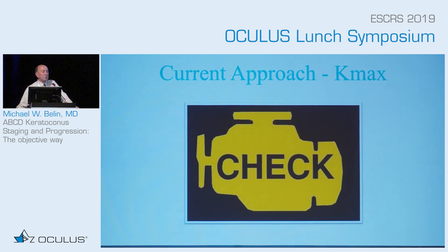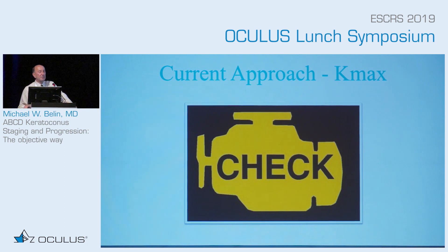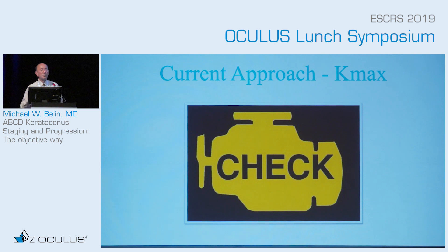When it comes to determining progression in keratoconus, for years we've relied on old methods — K-max. I'm a car person, and this is something in the US we call an idiot light. It lets you know when you've gone too far and damage has already been done, and that's kind of what we've been doing with keratoconus.